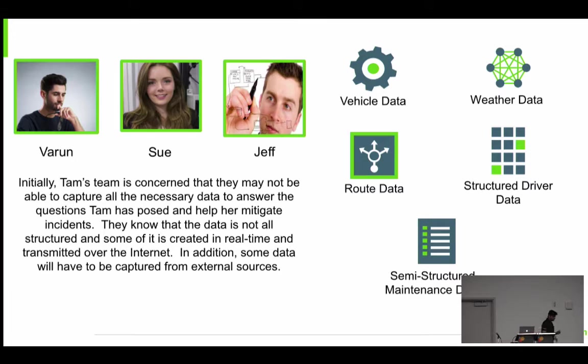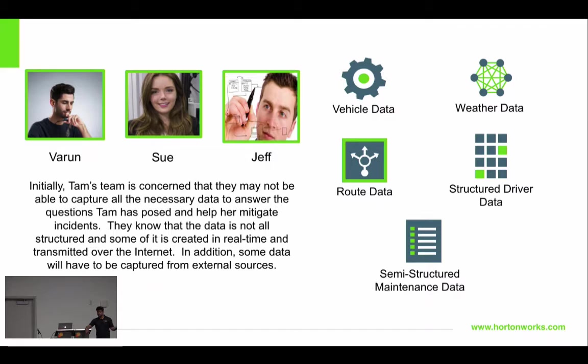How do they go about doing this? Megacorp, like a traditional business, has data spread over different departments. Some of the questions Tam proposed cannot be solved by the data they already have — things like weather and geolocation data. They need to know, for instance, what the weather looked like when a driver veered off course. So they assemble a team of data scientists — Varun, Sue, and Jeff — who come back and say they need more data to solve the problem.